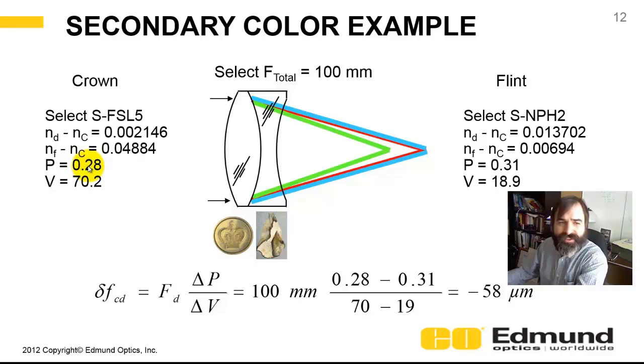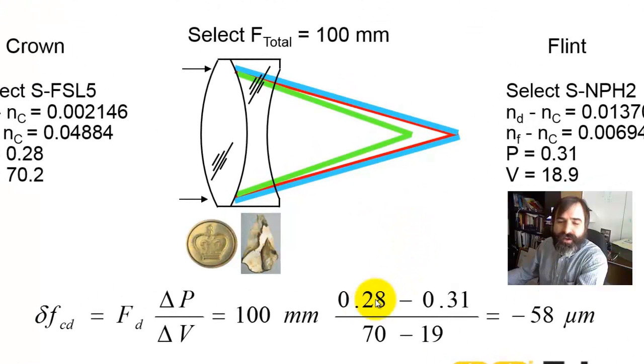So calculating partial is just dividing these two numbers. So the crown, FSL5, is 0.28. Whereas the flint, NPH2, is 0.31. And to calculate the secondary color for this doublet, and again, we calculated the power. I believe we calculated the power in Optics Tutorial 10. And then, the secondary color, 0.28 minus 0.31, delta partial, divided by the delta Abe, 70 minus 19, or it's roughly 58 microns.